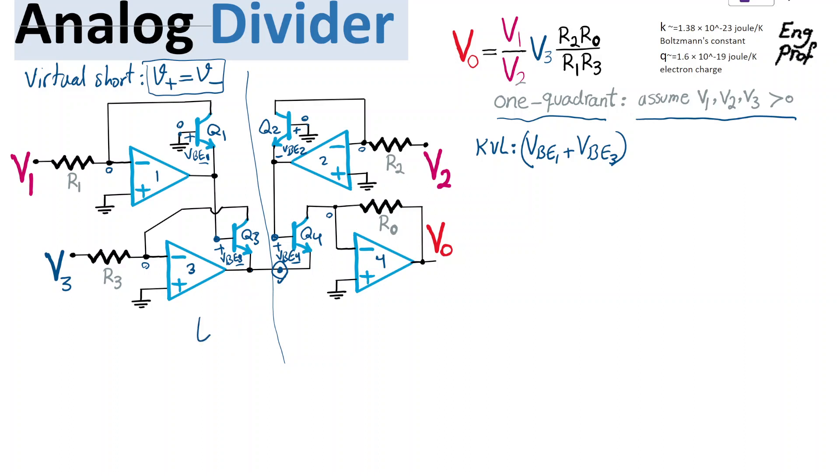So this side is equal to the sum of the two other base emitter voltages, transistor 2 plus VBE of transistor 4, which is basically the two transistor on the right-hand side of the circuit.